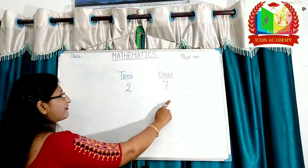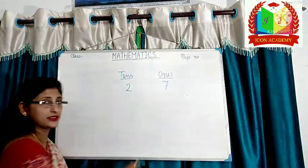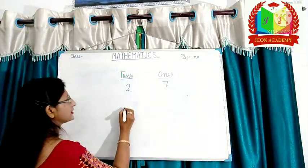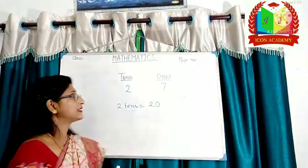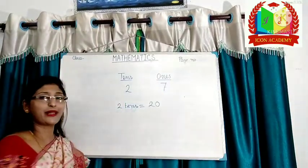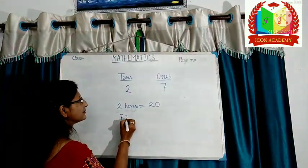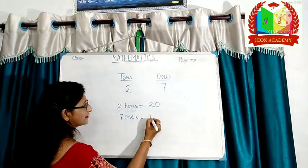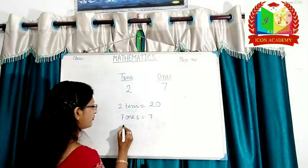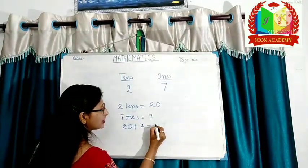Twenty-seven, two tens, seven ones. Two tens equal to twenty. Seven is ones place. Its place value is seven. Number twenty plus seven equal to twenty-seven.